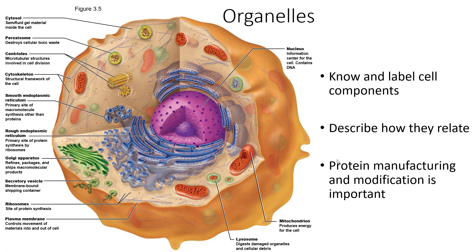Let's take a brief tour before going into more specifics. The peroxisome destroys cellular toxic waste using an enzyme called catalase to destroy reactive species produced as a byproduct of metabolism. Centrioles are microtubular structures involved in cell division — we'll focus on these specifically when we cover mitosis. The cytoskeleton is the structural framework of the cell. The smooth endoplasmic reticulum is a primary site where macromolecules such as starch are synthesized. The rough endoplasmic reticulum is a primary site where proteins are synthesized by ribosomes, which translate RNA into protein.